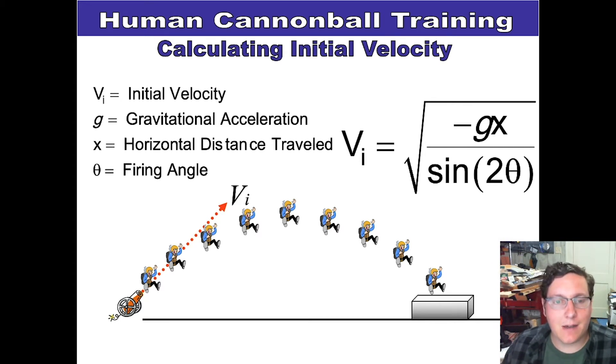And then we have x, indicating our horizontal distance traveled - how far you're actually going from left to right. And then we've got our firing angle, where you initially take off at, that exiting of the cannon.